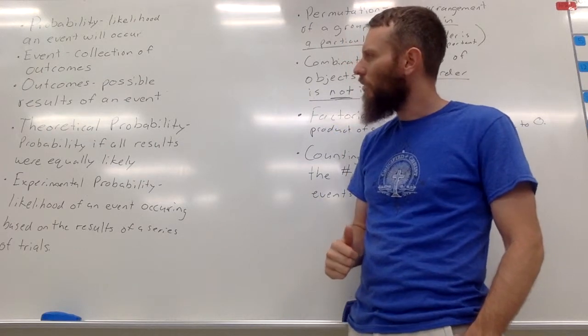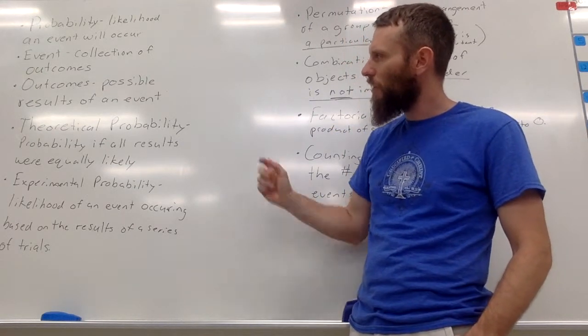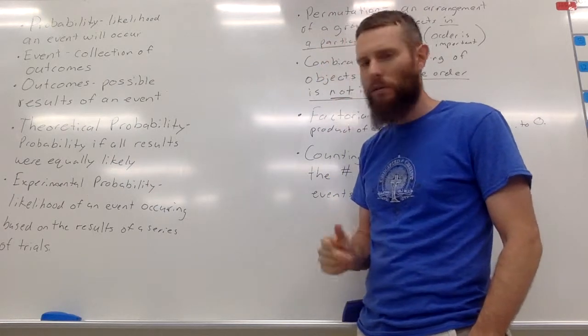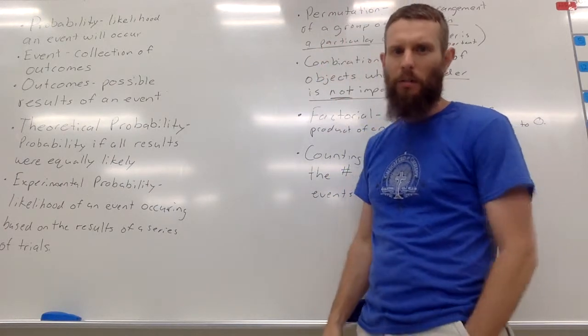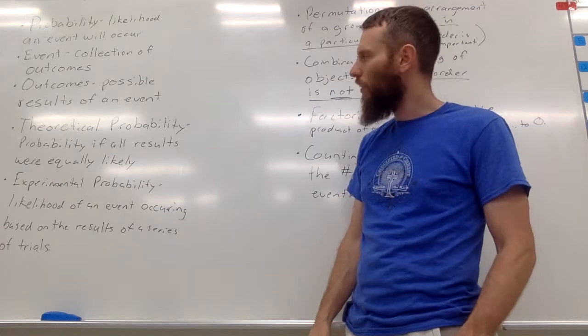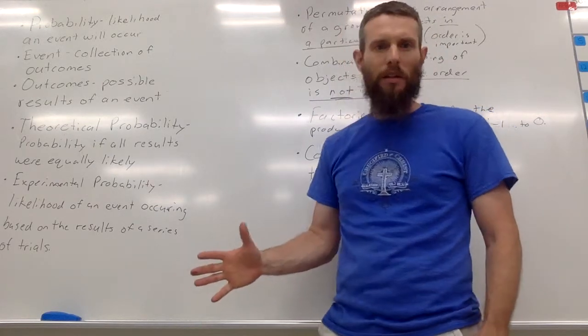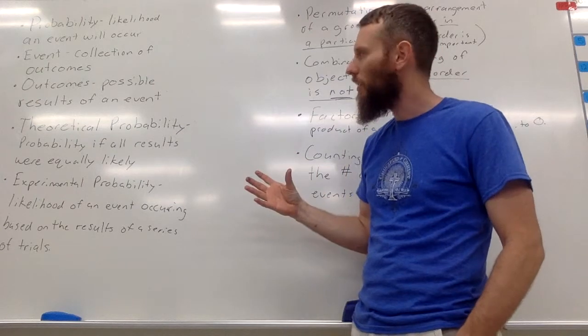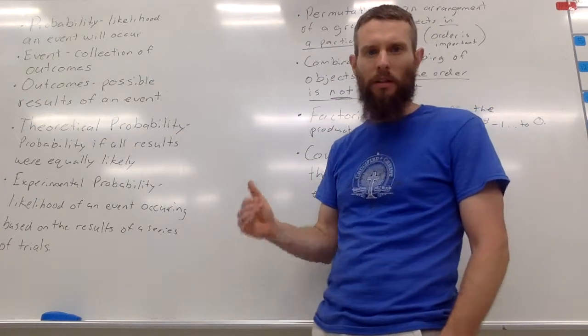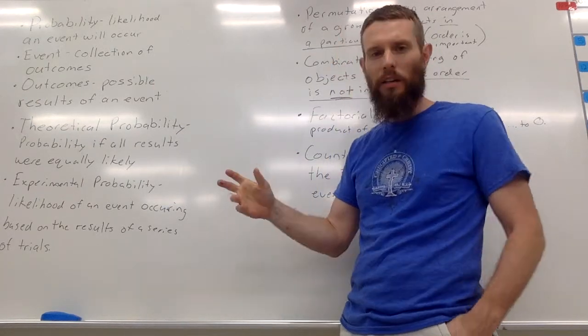Okay, which leads us to two more topics of theoretical probability and experimental probability. Theoretical probability is the probability if all the results were equally likely. Another way of saying this is the theoretical probability is what we think would happen, what we expect would happen, if life was fair.